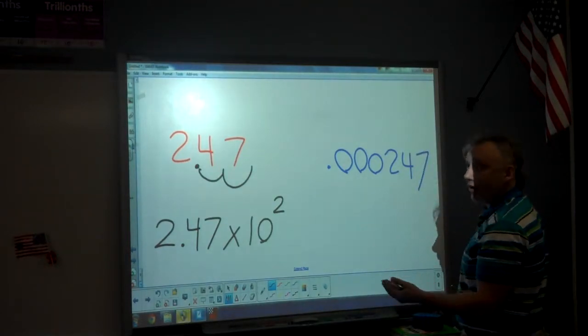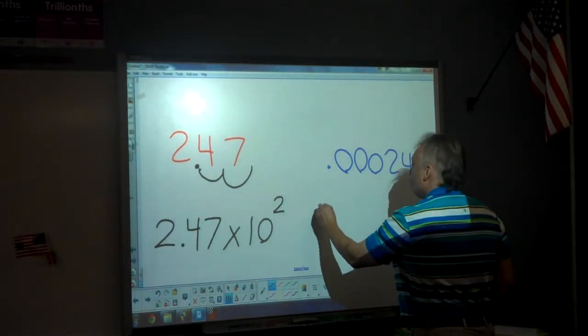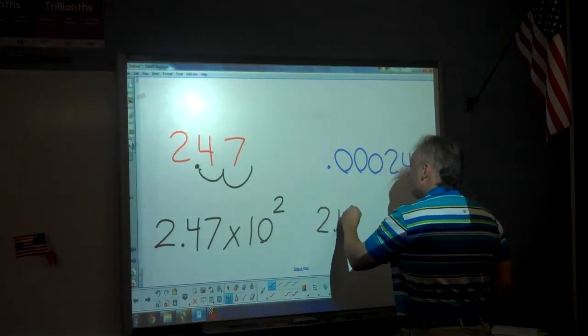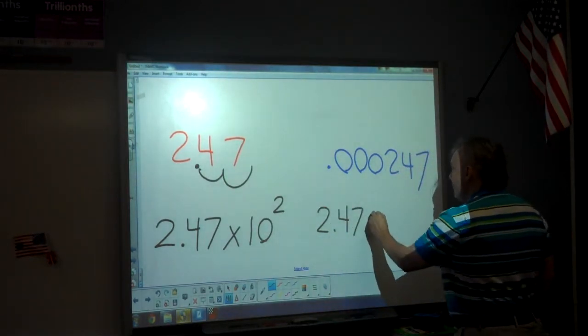Now, in this example, you still have the 2, 4, and 7. So it would still start out as 2.47, and then it's always times,